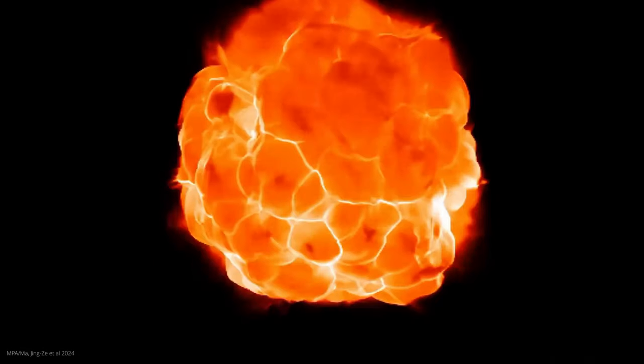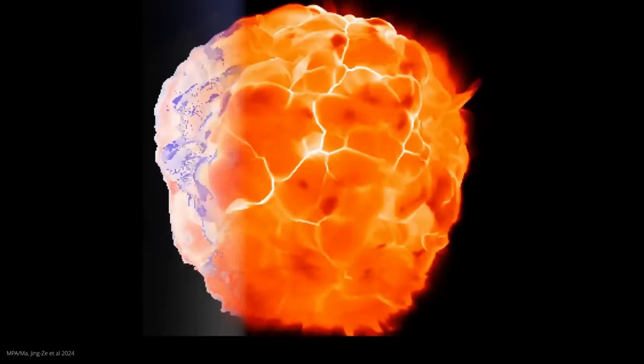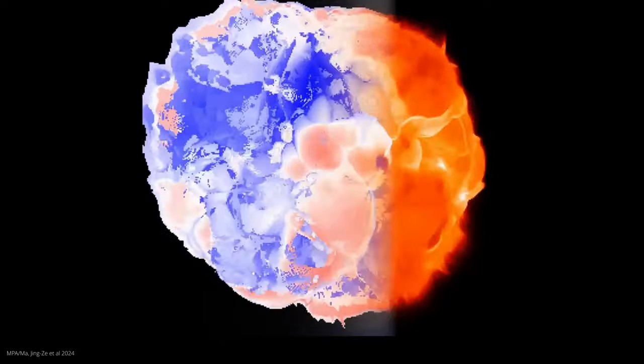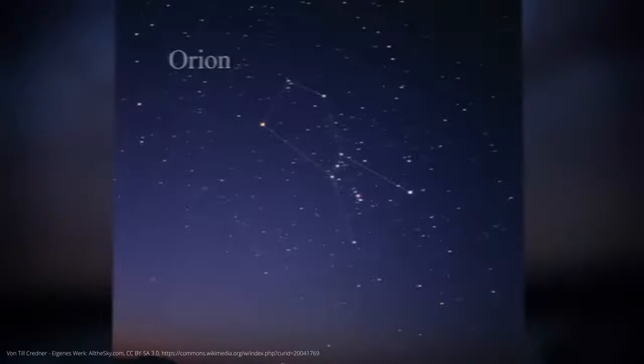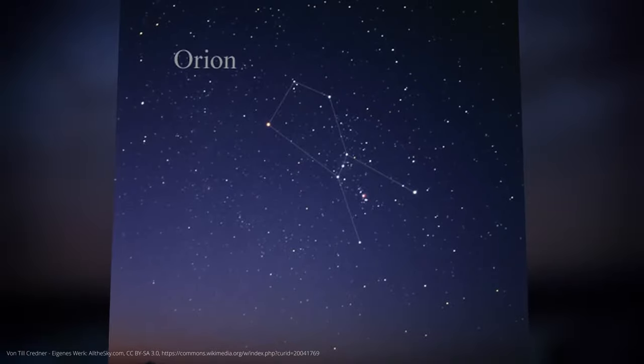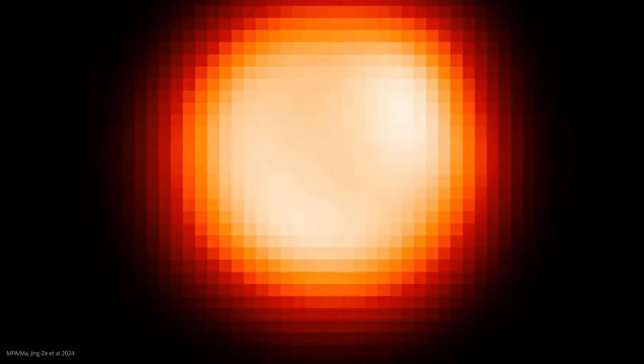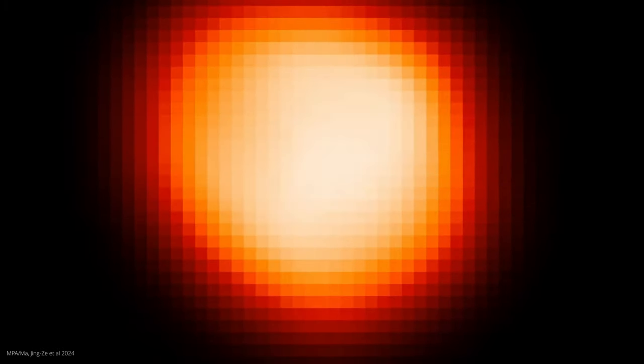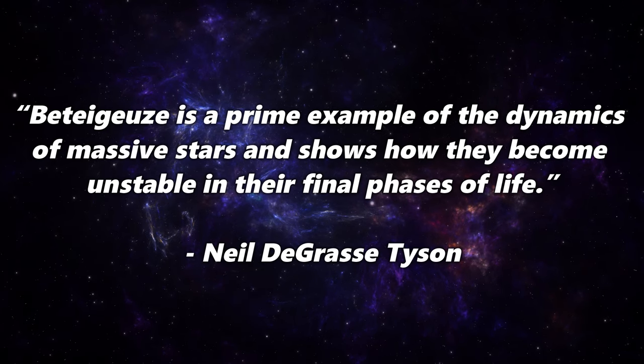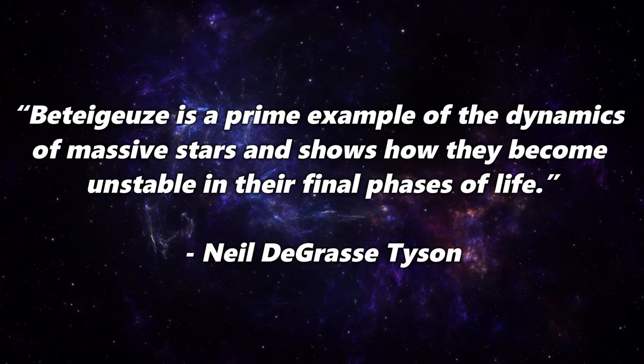Betelgeuse is the brightest star in the Orion constellation and one of the most striking stars in the night sky, and is also one of the most mysterious because astronomers have been puzzling over its strange behavior for a long time. The star regularly shows brightness fluctuations that cannot be fully explained by its normal pulsations. The well-known astronomer Neil deGrasse Tyson says, Betelgeuse is a prime example of the dynamics of massive stars and shows how they become unstable in their final phases of life.